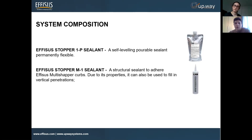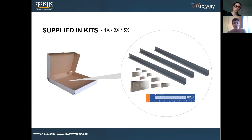You can also use the M1 sealant for vertical penetrations, such as facade penetrations — we'll see a couple of examples of this at the end of the presentation. We supply this in kits: a single membrane, three, or five membranes — multiples of that. The kit includes the membranes themselves plus metal clips: once you curve the membrane as you want it, you attach the clip. For example, a one-membrane kit comes with three metal clips, so you can do three curves from one membrane.